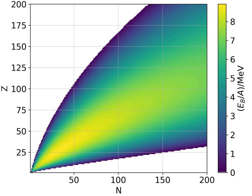Nuclear binding energy is the minimum energy that would be required to disassemble the nucleus of an atom into its component parts. These component parts are neutrons and protons, which are collectively called nucleons. The binding energy is always a positive number, as we need to spend energy in moving these nucleons, attracted to each other by the strong nuclear force, away from each other.